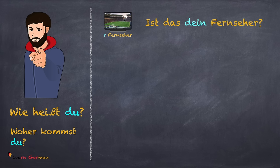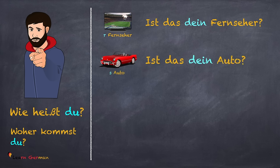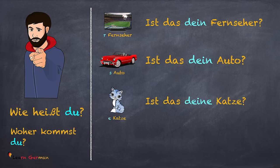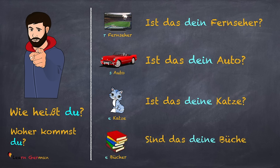Ist das dein Fernseher? Ist das dein Auto? Ist das deine Katze? Sind das deine Bücher? In this case also, for masculine and for neutral, you would say 'dein,' and for feminine and plural, you would use 'deine.'